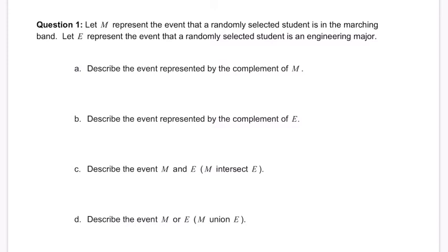Let's start by reading this question. We're told that M represents the event that a randomly selected student is in the marching band, and E represents the event that a randomly selected student is an engineering major.